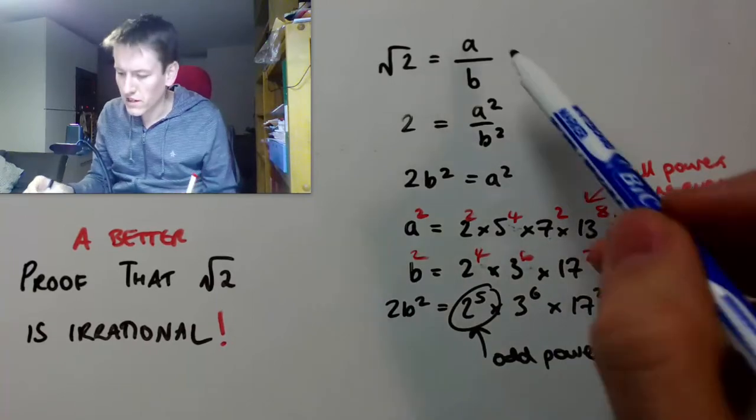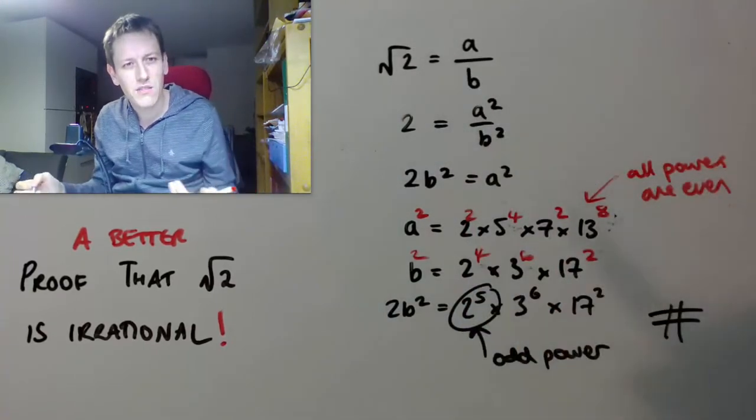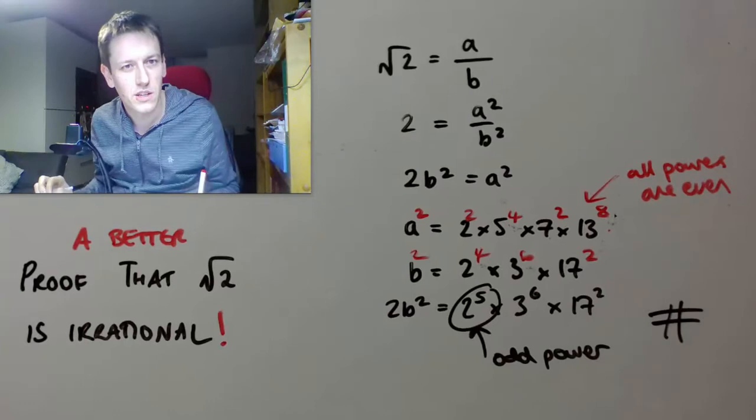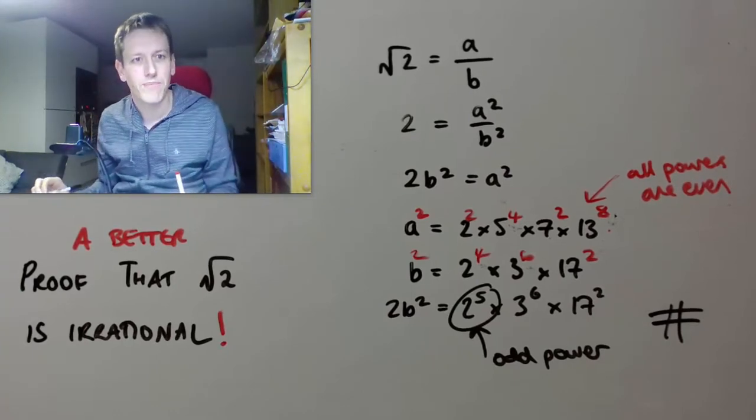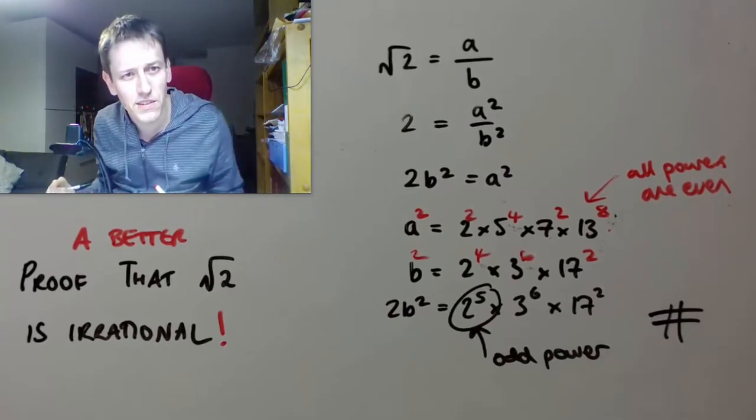So, it must be that writing root 2 in this way can only lead to a contradiction. So, it must be impossible to write root 2 in this way. And there we go. That's it. Perfectly good, complete proof.